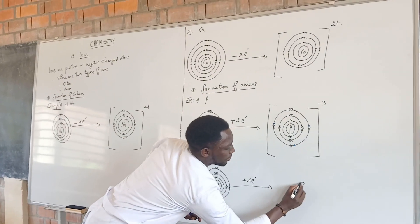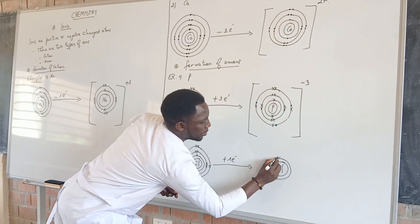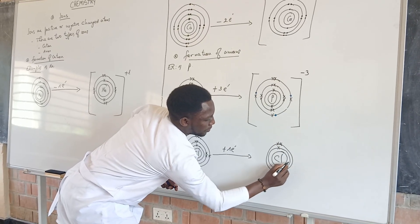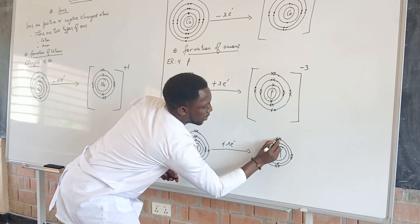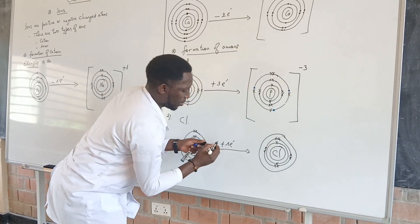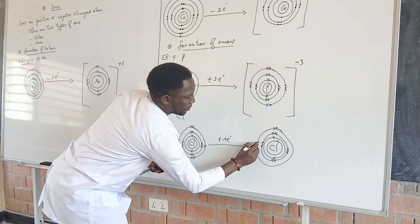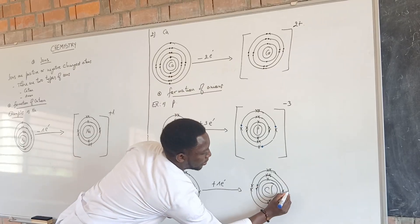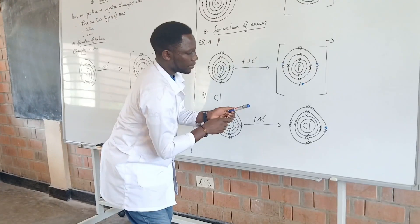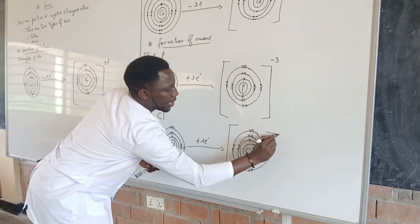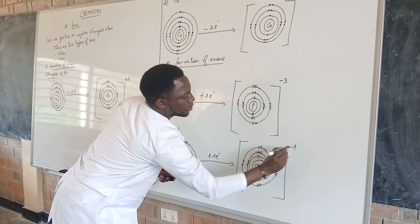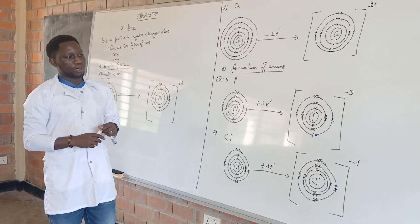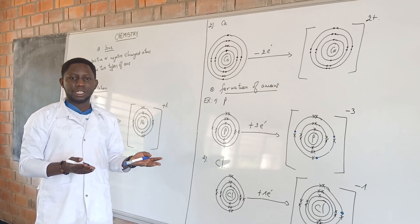Our chlorine ion — first shell has two, second shell has eight. The last shell, remember, at the beginning before forming the ion, it had seven, and then it gains one electron. That's why our chlorine becomes stable by gaining one electron. I think this is understandable. Thank you for watching this video. Remember to subscribe, give a comment, give a like and share. Bye-bye.